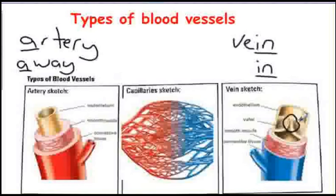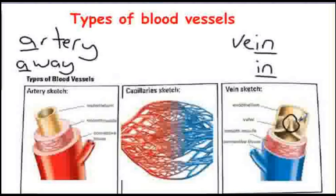The third type of blood vessel are capillaries. These are tiny thin tubes with walls only a single cell thick and they connect arteries to veins. These thin walls are important so that substances like oxygen, glucose and carbon dioxide can move in and out of the blood as it goes through the capillaries.